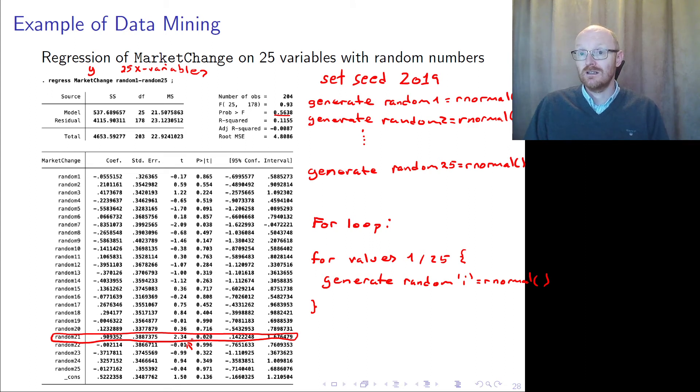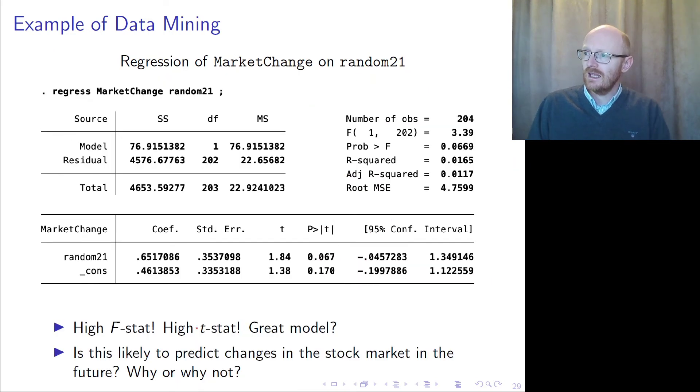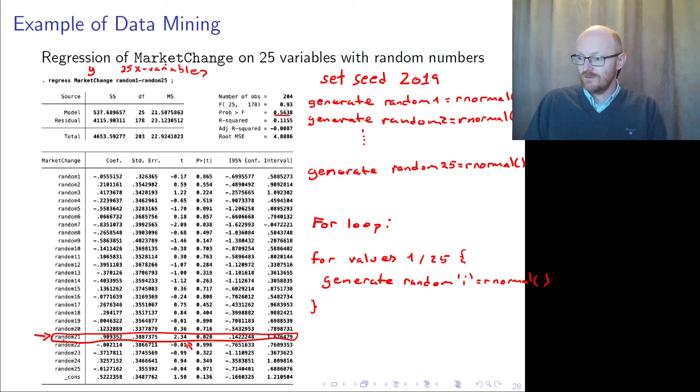But what you do see is that you have here one random number sequence which was actually significant. So here you had a t-value of 2.34, which is significantly different from 0 at the 2% level, even though it's a random number sequence.